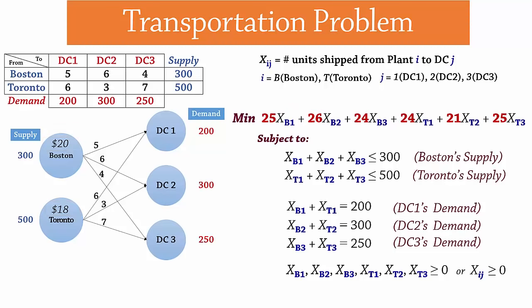Note here that if total supply were to equal total demand, we could have used equality for all constraints. We refer to that situation as a balanced transportation problem. This problem, however, is an unbalanced transportation example where supply exceeds demand.